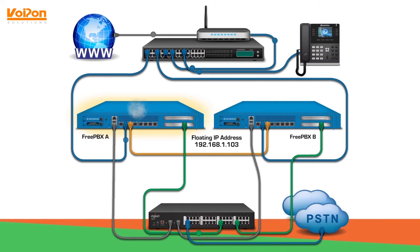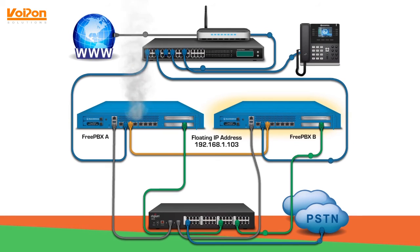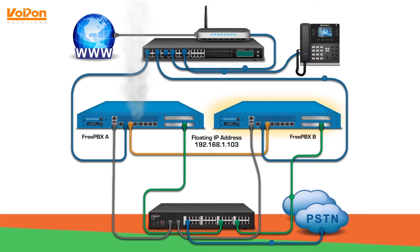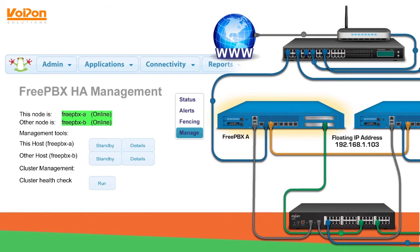In the event of a software, hardware, or power failure on your primary PBX, the system will fail over to the mirrored secondary PBX. Calls will then travel through the slave node with no issues. When the primary PBX is repaired or recovers, you can switch back to the primary FreePBX node in just seconds by using the GUI module, which also acts as an online management tool.